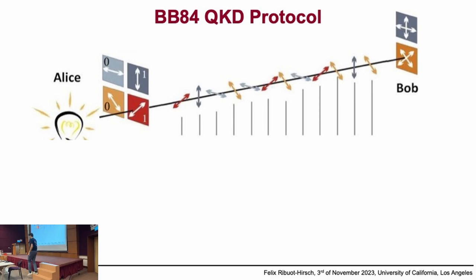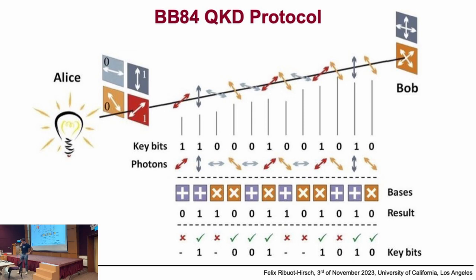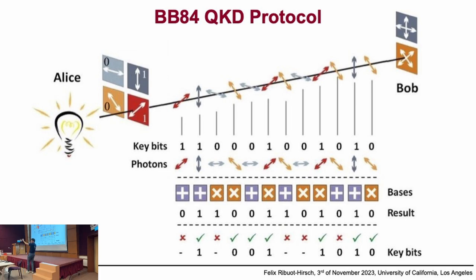So we're going to use this rule to make a communication protocol. Alice randomly sends vertical, diagonal, anti-diagonal, and horizontal photons to Bob. Bob measures them randomly in one or the other bases. 50% of the time Bob is measuring in the right basis and gets the correct answer. 50% of the time he's in the wrong basis. Then Alice and Bob can talk publicly — everybody can listen — and they share which basis they used. Alice knows what she sent, Bob knows which basis he measured in. They select the 50% of cases where they agreed to secure some communication.